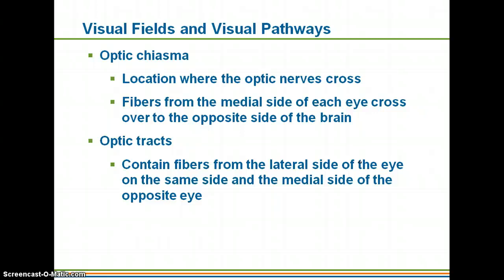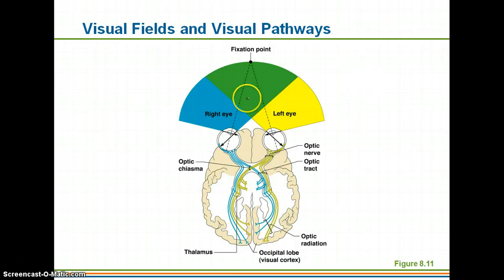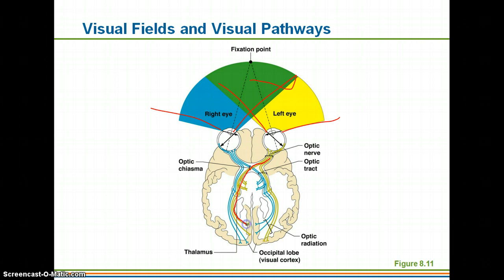The optic chiasma is where the optic nerves — which take impulses from the eyes to your brain — meet. The optic chiasma is an area where some of the optic nerves cross, so you'll have some optic nerves from the right eye and some from the left eye cross over to go to opposing sides of the brain. The optic tracts — remember, a tract is a bundle of nerve processes located in your central nervous system — carry these signals onward.